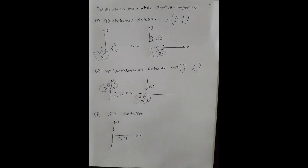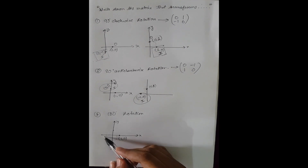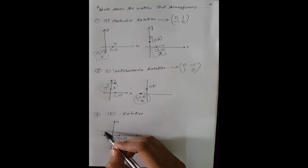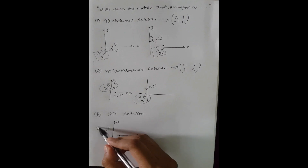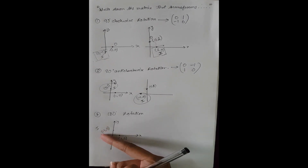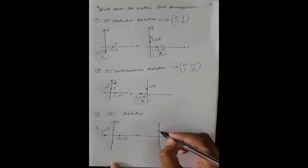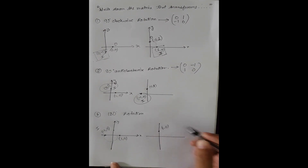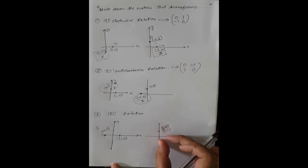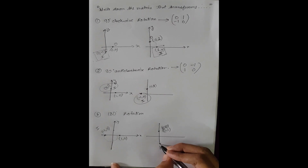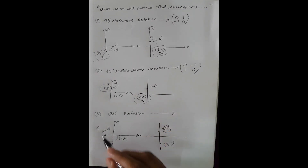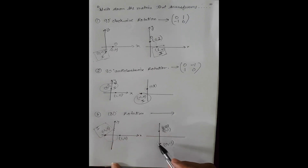For 180 degree rotation, the coordinate (1, 0) will move 90 plus 90 degrees — total 180 — so the image will be (-1, 0). You can also move in an anti-clockwise direction. The image for the y unit vector will be (0, -1). So the matrix is [-1, 0; 0, -1].